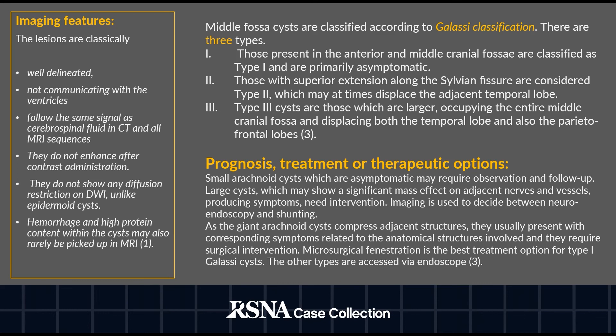Middle fossa arachnoid cysts are classified using the Galassi classification. Type 1 are those in the anterior and middle cranial fossa, asymptomatic, and not extending into the sylvian fissure. Type 2 extend superiorly into the sylvian fissure and may displace the adjacent temporal lobe. Type 3 are larger, occupying the entire middle cranial fossa, and displace the temporal, parietal, and frontal lobes. Our case was Type 1 Galassi classification.